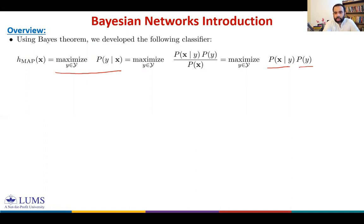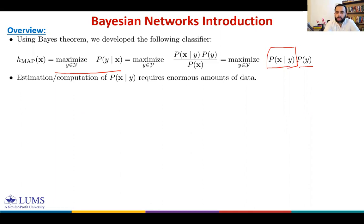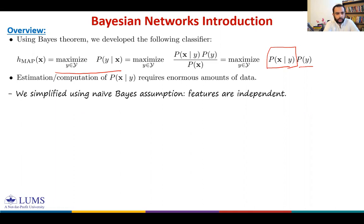When we formulated naive Bayes and carried out the naive Bayes assumption, that was based on the fact that estimation or computation of this joint distribution requires enormous amounts of data. So this likelihood here is a joint distribution, and computing it during training requires enormous amounts of data. We simplified using the naive Bayes assumption: that the features are independent.